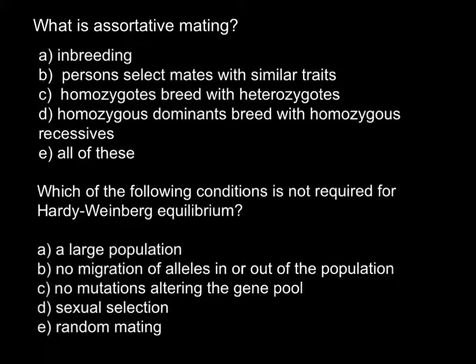Here is the first question: what is assortative mating? There are five answers to choose from. I have a hint for you — the answer is not E, 'all of these.' There is one correct answer and the rest are incorrect.